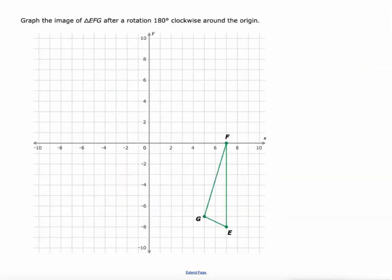Let's do a 180 degree clockwise rotation, which is the same as 180 degree counterclockwise. The rule is that (x, y) becomes (-x, -y).